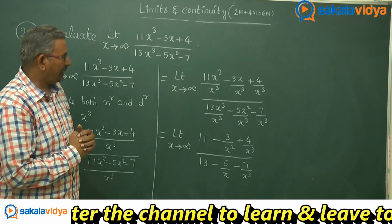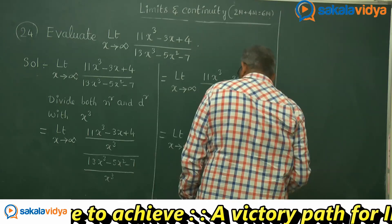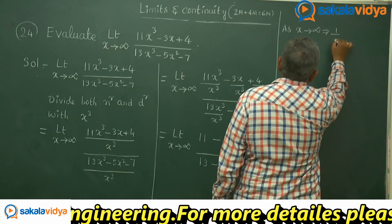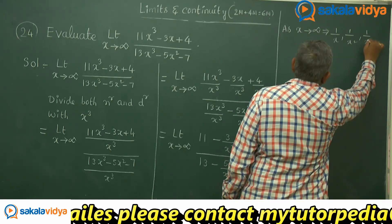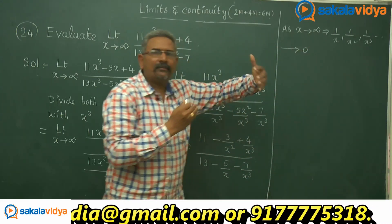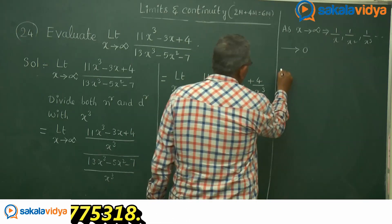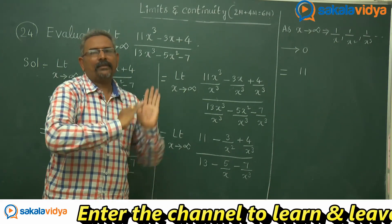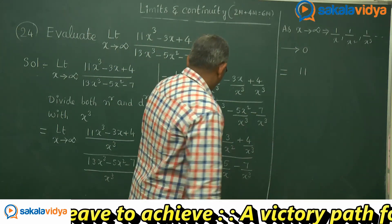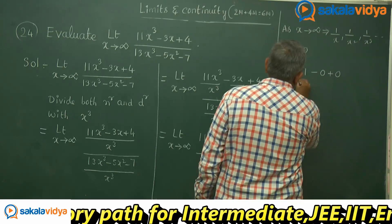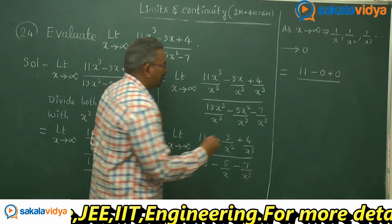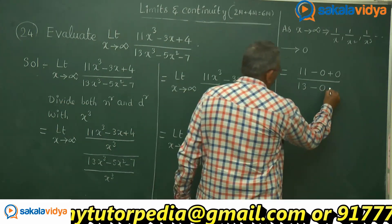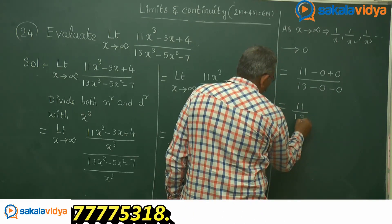As x approaches infinity, 1 by x, 1 by x square, and 1 by x cube all tend to 0. So 11 remains constant, while 3 by x square approaches 0 and 4 by x cube approaches 0. In the denominator, 13 remains, and 5 by x and 7 by x cube both approach 0. Therefore the answer is 11 by 13.